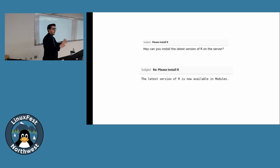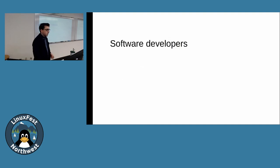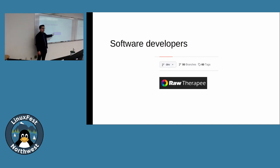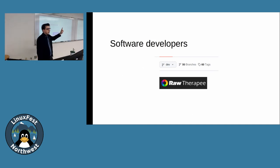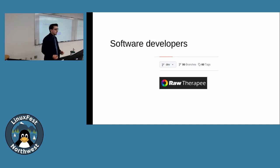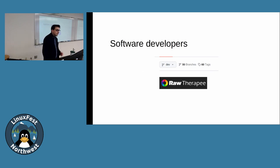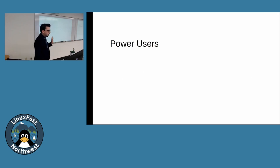Maybe you're not a sysadmin for an HPC cluster — that's fine. Maybe you're a software developer or someone who uses development versions of software. For example, I had to use a couple of different versions of RawTherapee, an image processing application with 50 branches on GitHub, and I needed two of those different branches for a project. The codebases had diverged enough that I couldn't merge them easily, and I couldn't just call the compiled binaries directly because it's a dynamically linked program against its own libraries. Setting it up by hand would have been quite difficult, but I did it in modules and I still have a full head of hair as a result.